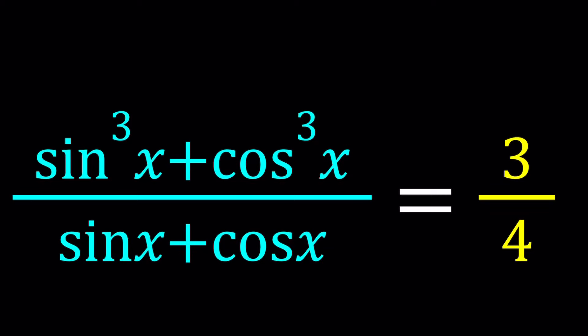Hello everyone. In this video we're going to be solving a trigonometric equation. We have sine³x plus cosine³x divided by sine x plus cosine x equals 3 over 4, and we're going to be solving for x values.